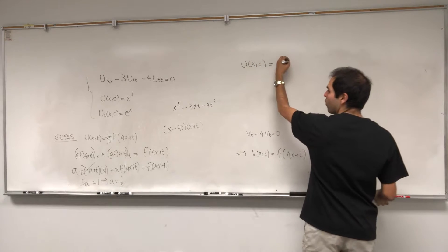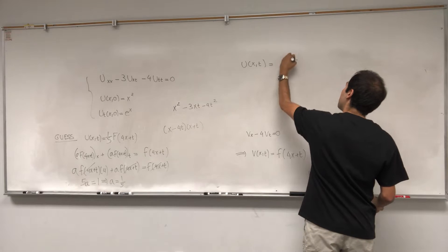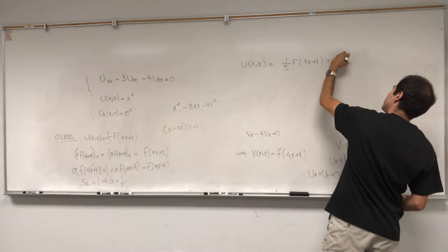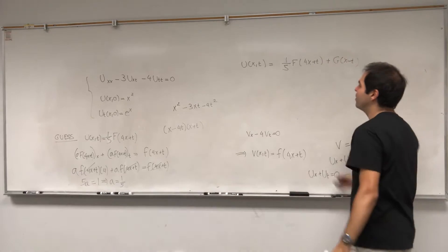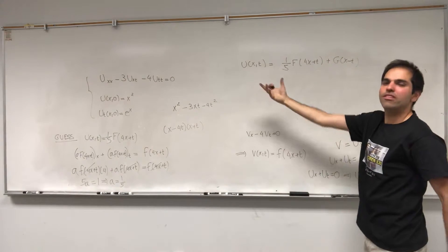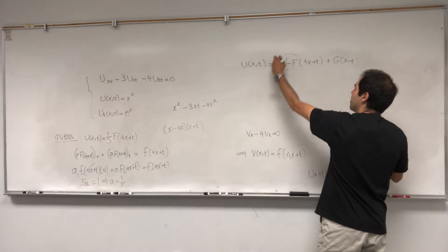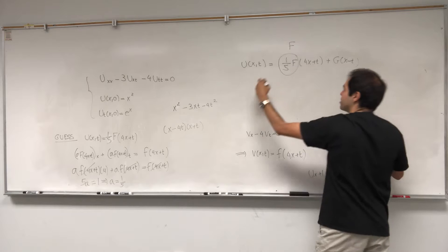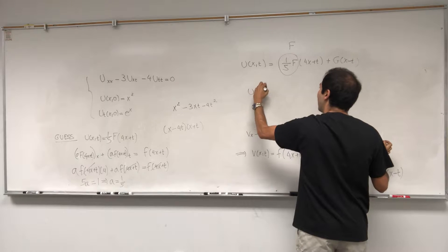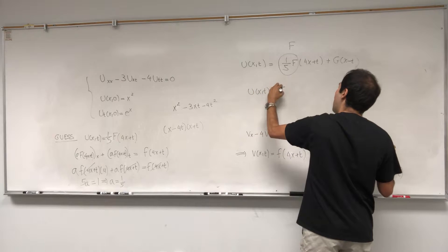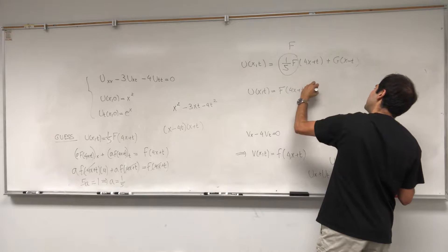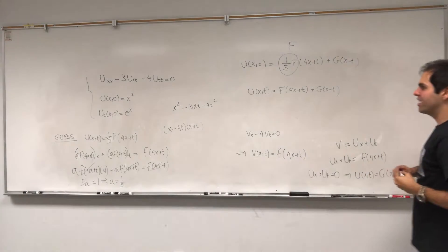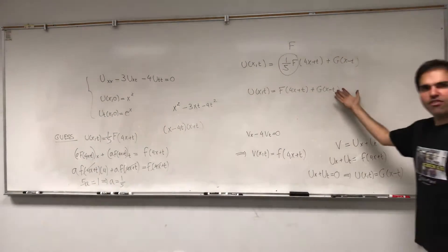And so the general solution is just G(x minus t) plus (1/5)·F(4x plus t). Since capital F is arbitrary, (1/5)·F is also arbitrary. So from now on we just write f(4x plus t) plus G(x minus t). Okay, that's good — we're halfway done.